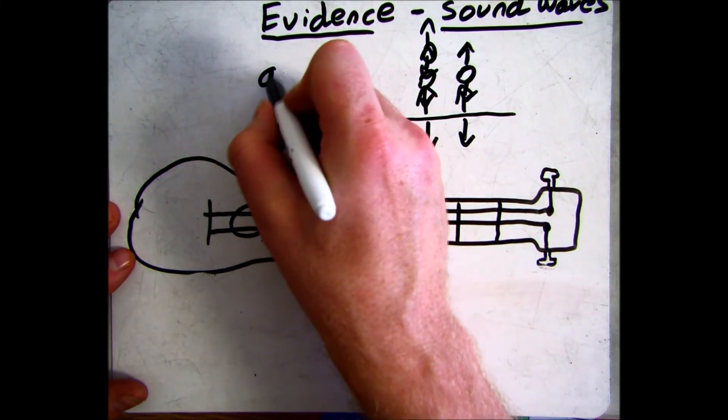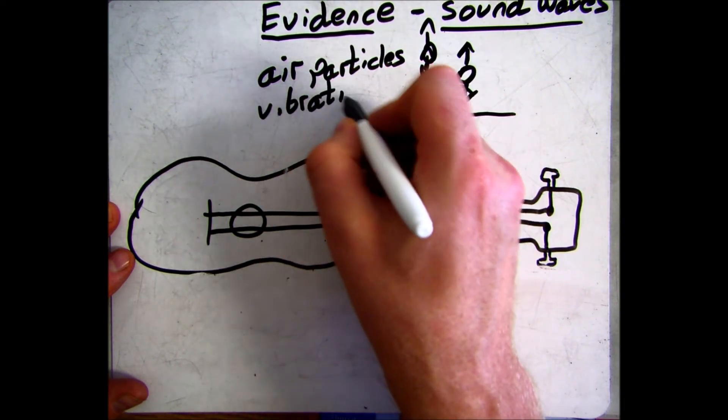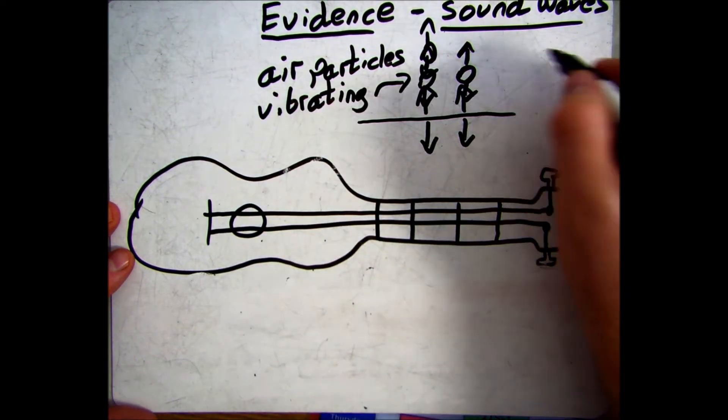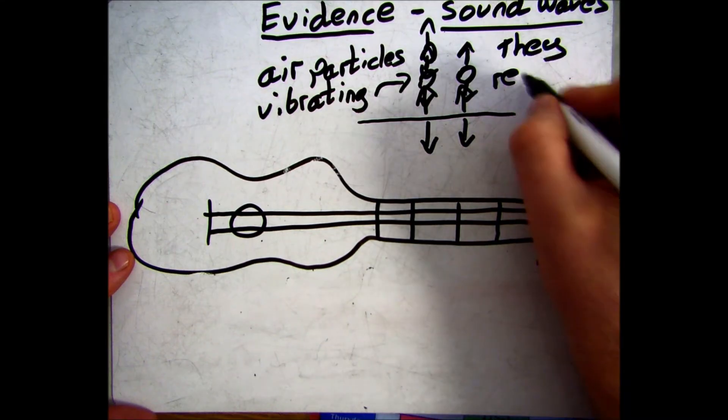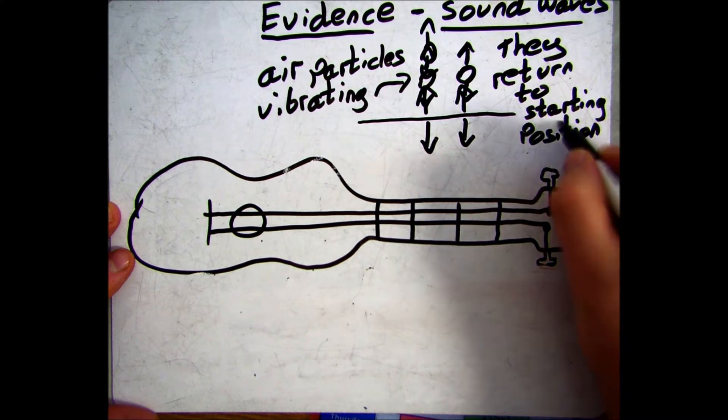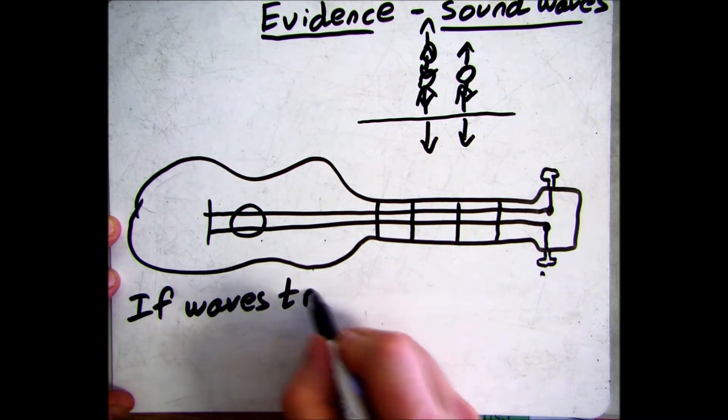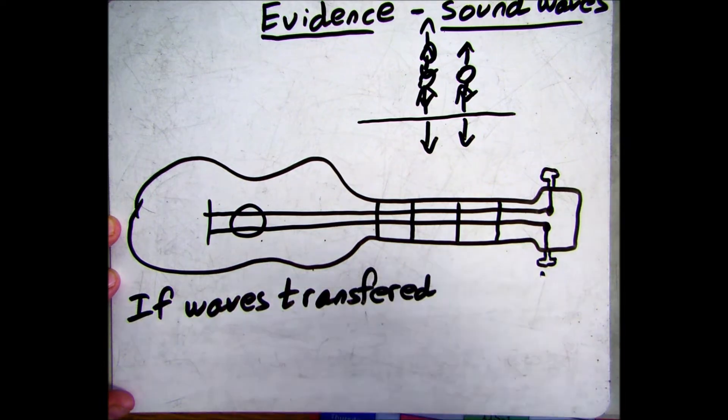So in this way the energy is moved away from the guitar string outwards, eventually to our ears so that we hear the music. But what doesn't happen is the air particles moving away. After vibrating they go back to their starting position, the same as the string has done.